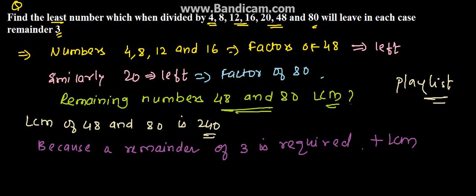Therefore, 240 plus 3 equals 243. So the least number which when divided by 4, 8, 12, 16, 20, 48 and 80 will leave in each case a remainder 3 is 243, which is the solution for the given problem.